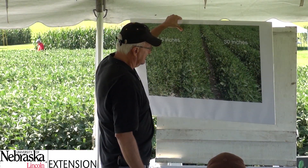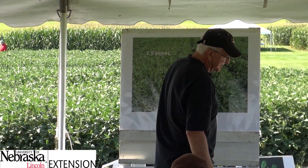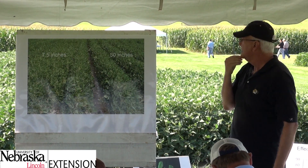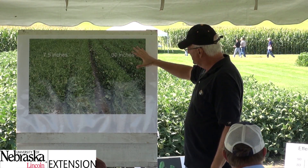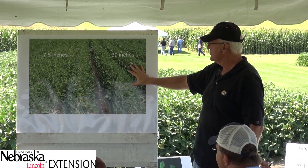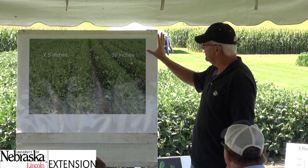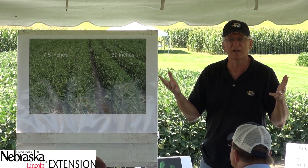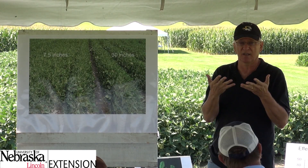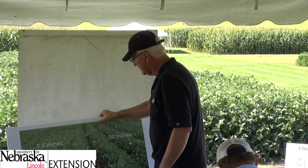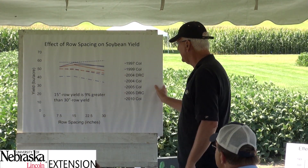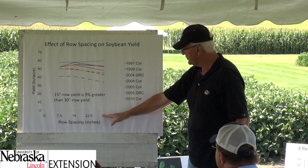Here are some plots of ours in Columbia. In this particular year, if you looked down through the canopy you could actually see a little bit of soil in the 30-inch rows — you can't in the 7.5-inch rows — and clearly if you can see soil, you're not capturing all that light. One of the things row spacing does is capture light sooner. We have several years of data here with 7.5-inch rows, 15-inch rows, and 30-inch rows.